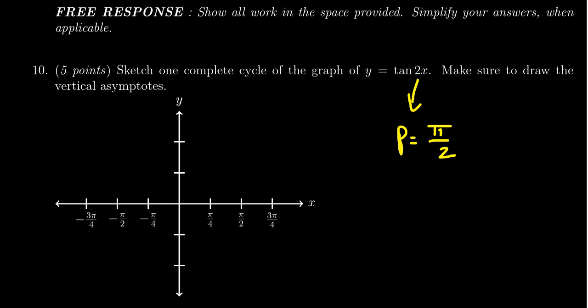So thinking of the standard tangent, which normally your vertical asymptotes would be from negative pi halves to pi halves, we're going to cut this in half. There's a horizontal compression by a factor of 2. So we're going to have vertical asymptotes now at pi fourths and negative pi fourths because we've cut this in half.